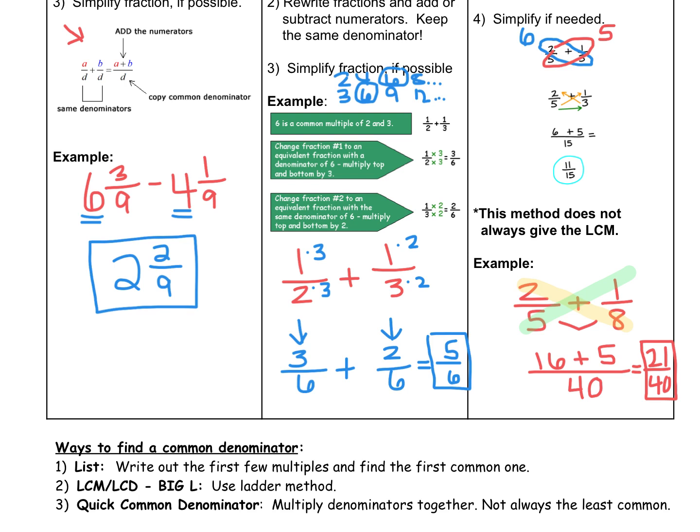Please take a moment to write down all of these notes. And to summarize this page, there are three ways that we can find a common denominator. We can list them out by writing the first few multiples and finding the first common one, like we did in the middle column example. Number two, we can find the least common multiple, which is also the least common denominator when working with fractions, and we can use the ladder method to find big L. And we can also use the quick common denominator method, which is the one we just did in the last column.